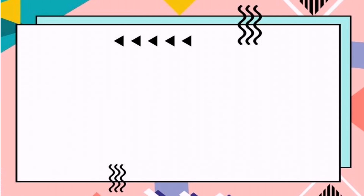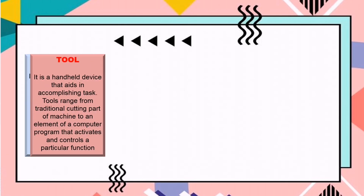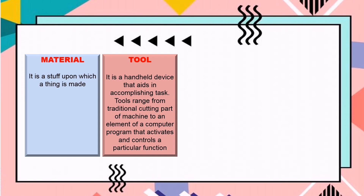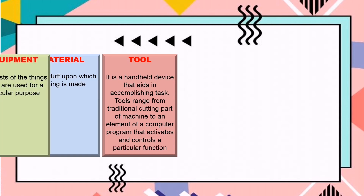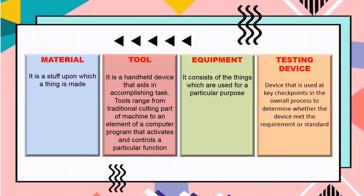Let's define first materials, tools, equipment, and testing devices. Material — it is the stuff upon which a thing is made. Tool — it is a handheld device that aids in accomplishing tasks. Tools range from traditional cutting parts of a machine to an element of a computer program that activates and controls a particular function. Equipment — it consists of things which are used for a particular purpose. And last, testing device — it is a device used at key checkpoints in the overall process to determine whether the device met the requirement or standard.